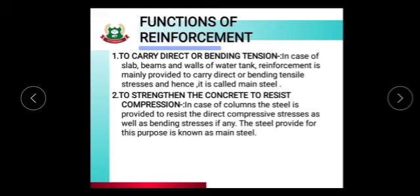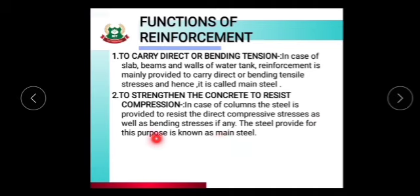The next function of reinforcement is to strengthen the concrete to resist compression. It provides strengthening to the concrete so that it can resist compressive stresses in the structure. In case of a column, steel is provided to resist direct compressive stresses as well as bending stresses. The steel provided for this purpose is also known as main steel.